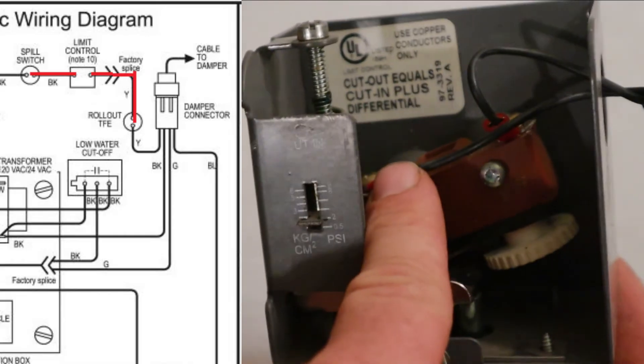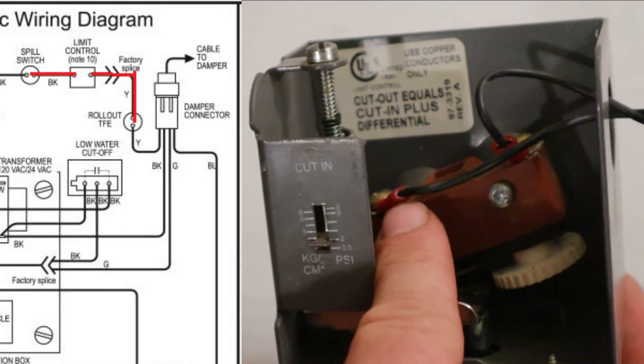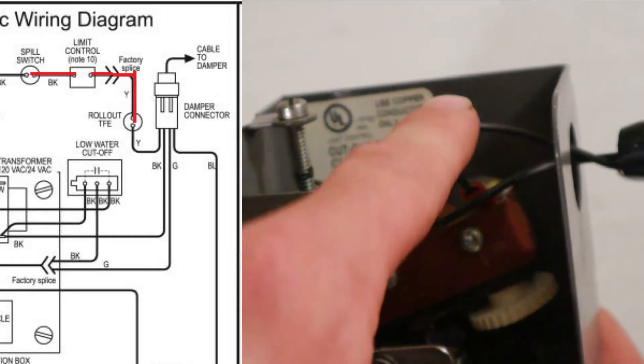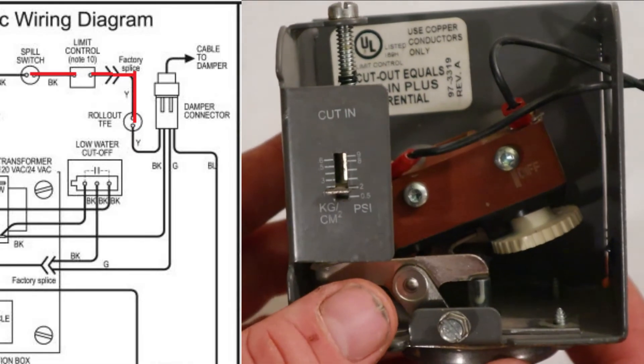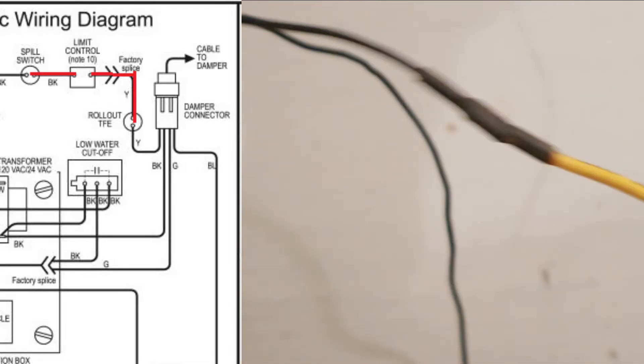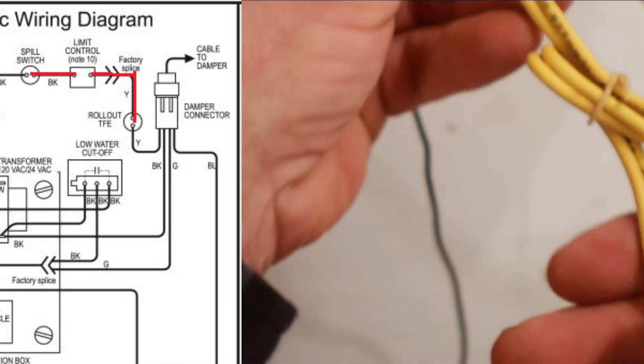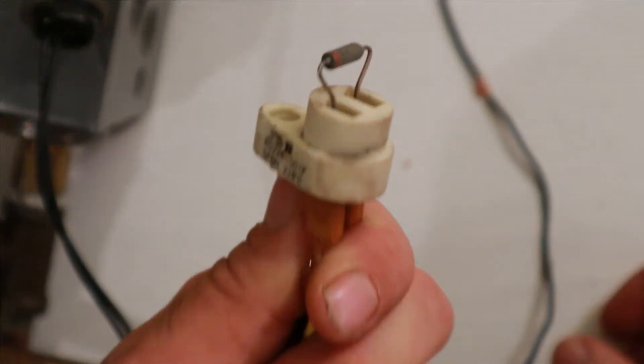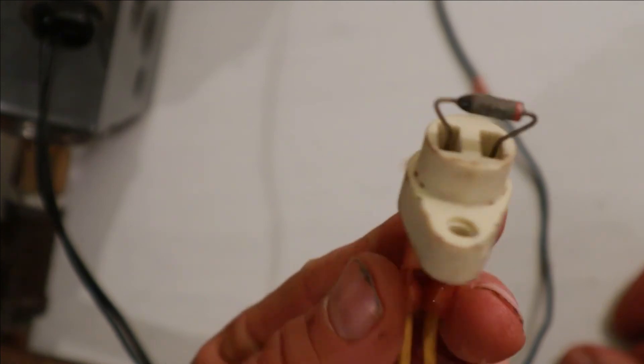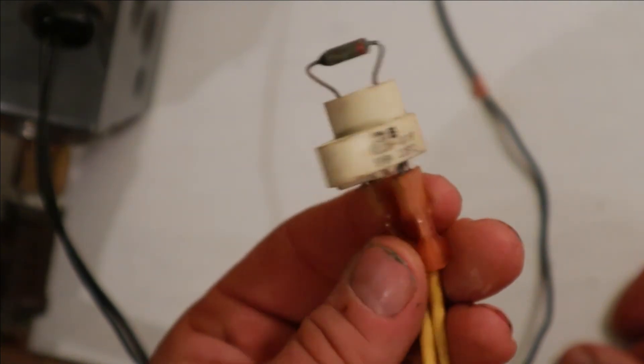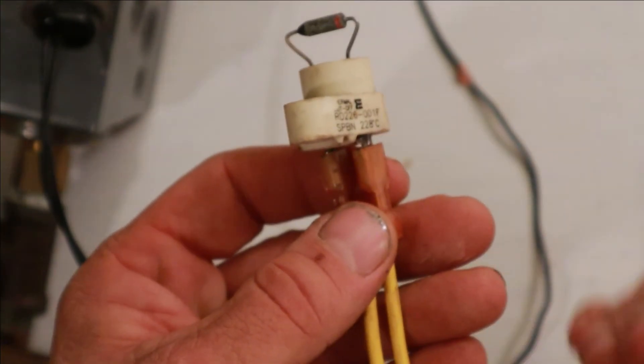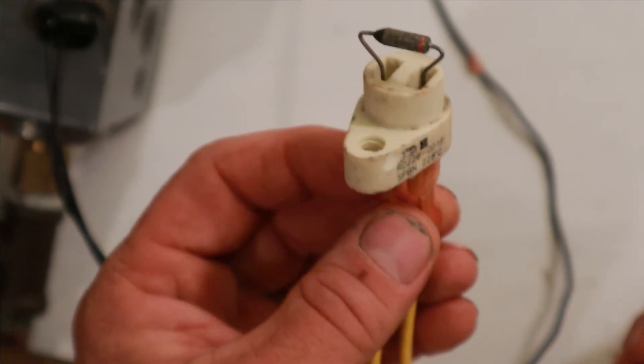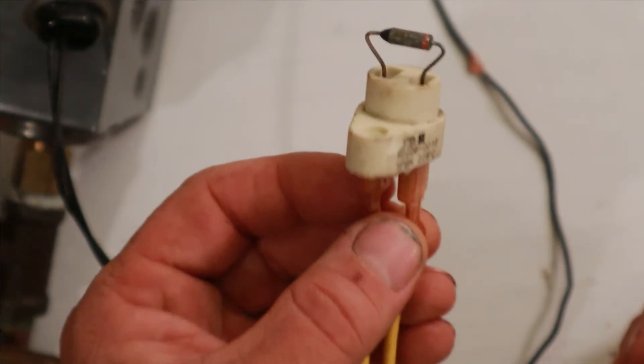So when the boiler pressure reaches that cut in limit, it's going to complete the connection between that wire that's coming from our spill switch and the wire that leaves the pressure troll. And when we trace that black wire from our pressure troll is going to come to two yellow wires, which will go to our flame rollout. Now this is down by the burner front and this is another safety. If the flame starts to roll back out of the boiler when it shouldn't, this will cut that circuit off and the boiler will not be able to fire.